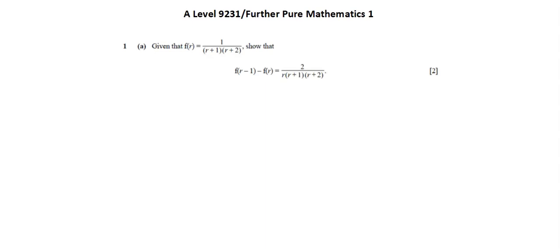Requirement A. Given that f of r equals 1 over quantity r plus 1 times quantity r plus 2, show that f of r minus 1 minus f of r equals 2 over r times quantity r plus 1 times quantity r plus 2.